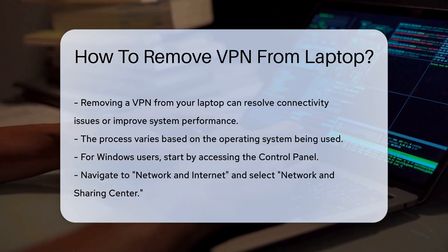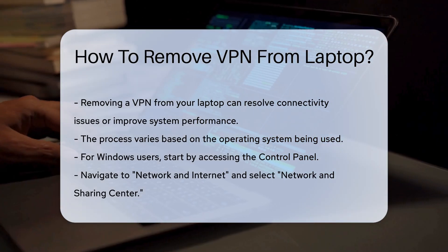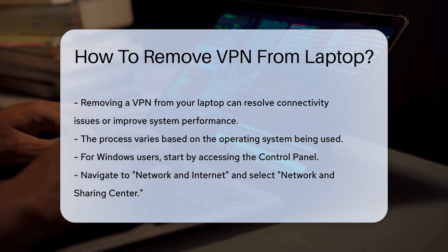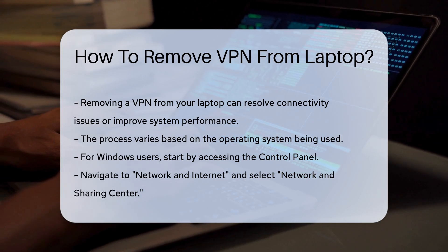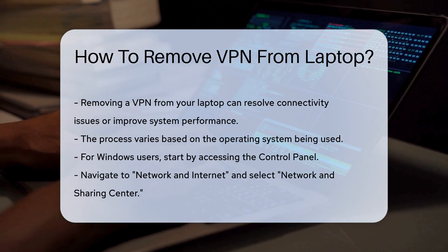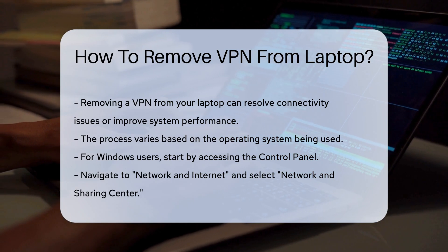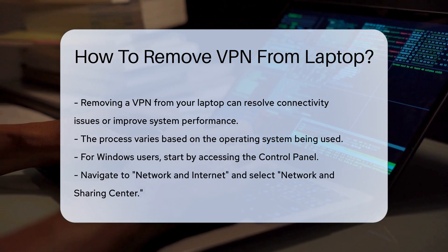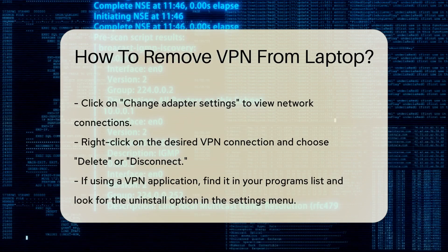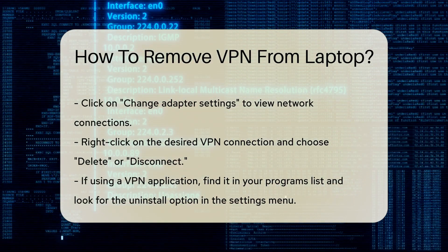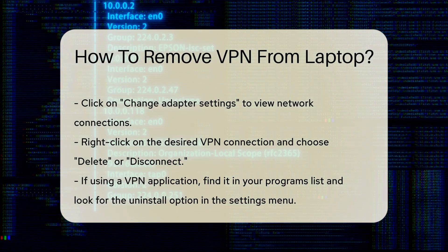For Windows users, begin by accessing the Control Panel. Navigate to Network & Internet, then select Network & Sharing Center. From there, click on Change Adapter Settings. You will see a list of network connections. Right-click on the VPN connection you wish to remove and select Delete or Disconnect.